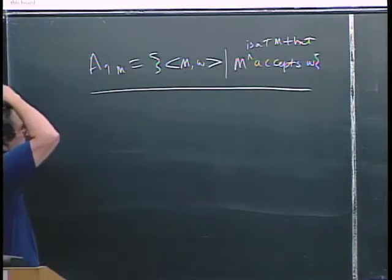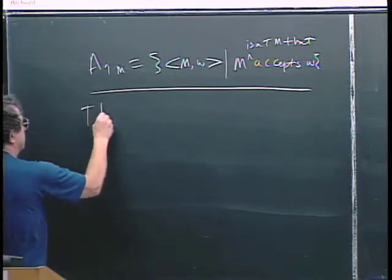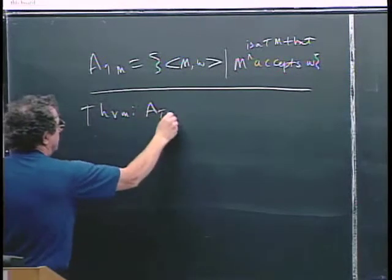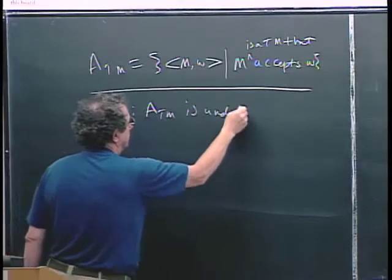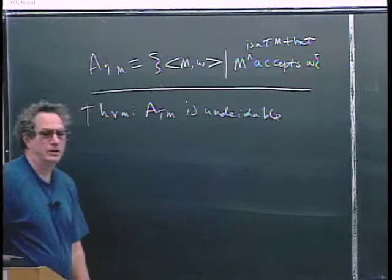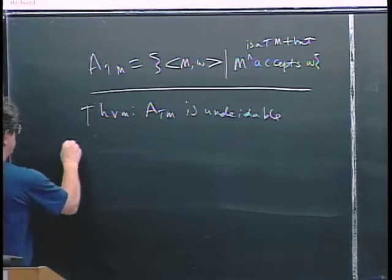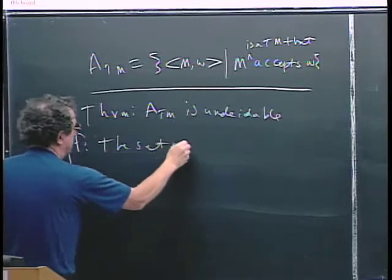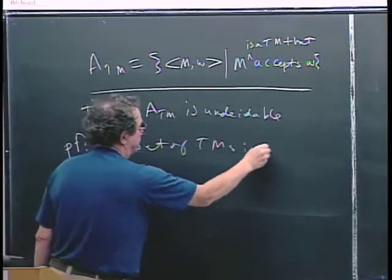Today I'm going to show you a different way of proving that ATM is undecidable, by diagonalization. The first thing to establish is that the set of Turing machines is countable.